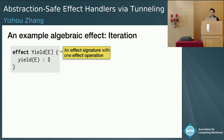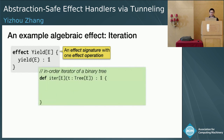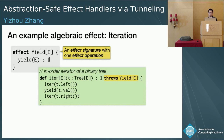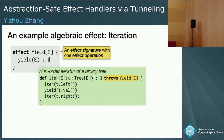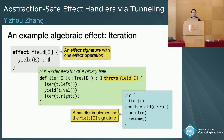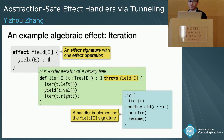The generality of algebraic effects comes from the ability to define signatures for effects. For example, we can define an effect signature called Yield, parameterized by a type parameter E, containing one effect operation that takes an E and returns unit. Using this algebraic effect, we can define an iterator for binary trees in a declarative way: iterate the left subtree, yield the current value to the client, and iterate the right subtree. Static checking requires putting the effect in the function header using a throws clause. The caller must handle this effect by providing an implementation for each operation in the effect signature — here the handler simply prints the element and resumes the iteration.